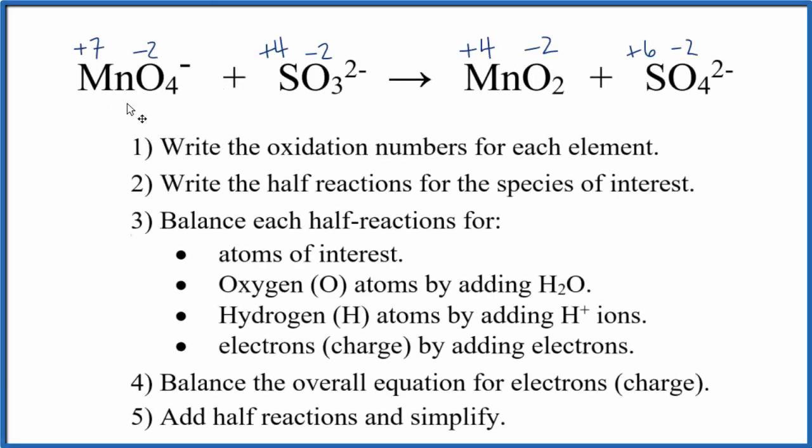Let's balance the redox reaction for MnO4 minus plus SO3 2 minus gives us MnO2 and SO4 2 minus. This is the permanganate ion. This is the sulfite ion.